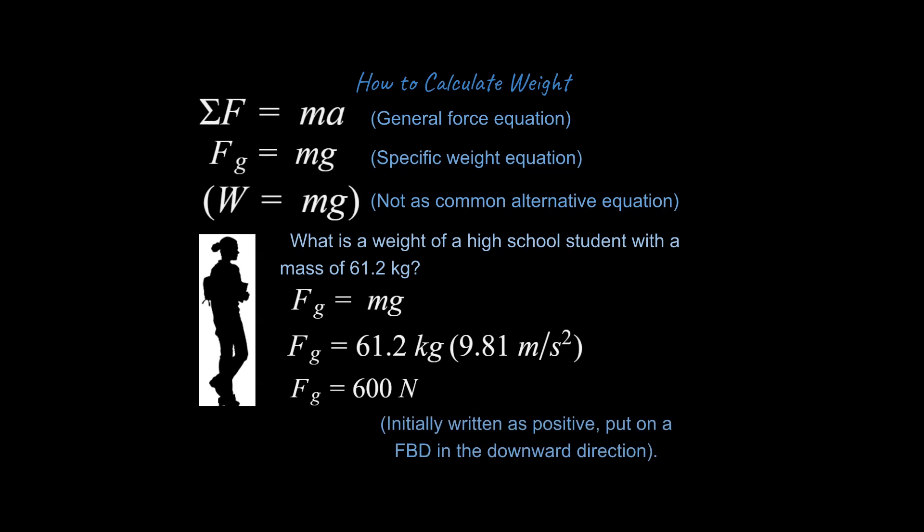I also want to say that we're going to write this as a positive value, like normally people talk about their own weight as a positive value as well. But when you write this on a free body diagram, you're going to have it pointing in the downward direction, typically the negative direction. So when we do calculations with the overall forces on a person, we would make that eventually a negative. But we're not there yet, we're just talking about how you would calculate the force due to gravity with an example problem.